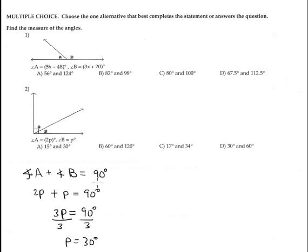This is the P value. P value is exactly the same with angle B. Angle B is equal P is 30 degrees and angle A is twice, 2 times 30 is 60 degrees. And the answer is D, 30 and 60 degrees.